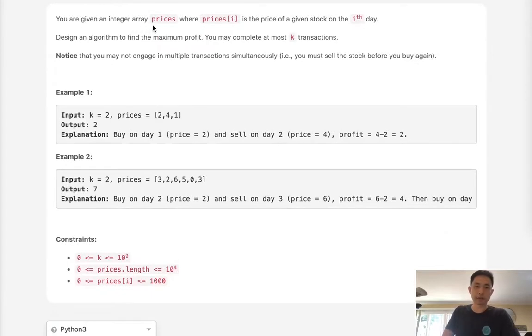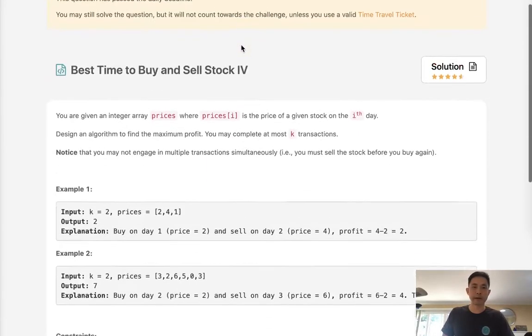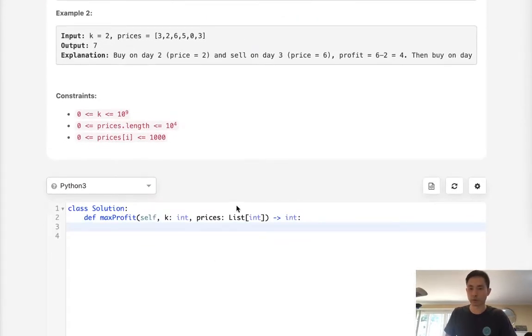You are given an integer array prices where prices[i] is the price of a given stock on the ith day. Design an algorithm to find the maximum profit you may complete at most k transactions. We've gone through this problem before with Best Time to Buy and Sell Stock 3, but let's go through it one more time because it is a difficult concept to get a handle on.